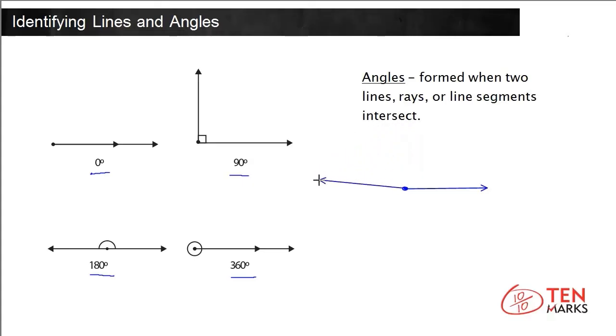When the rays go in opposite direction from each other, they form a 180-degree angle. And when I bring it all the way around again, it forms the 360-degree angle.